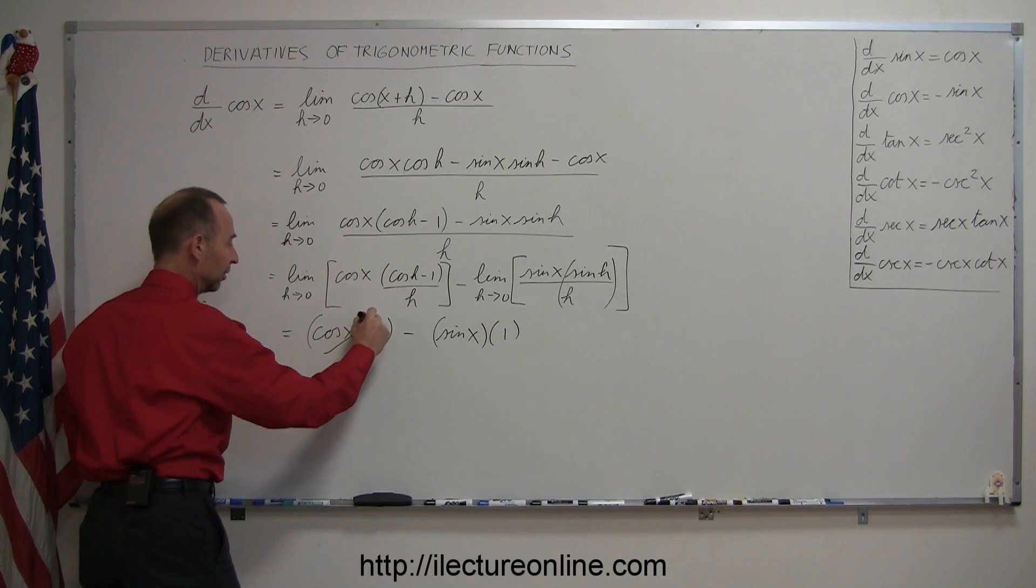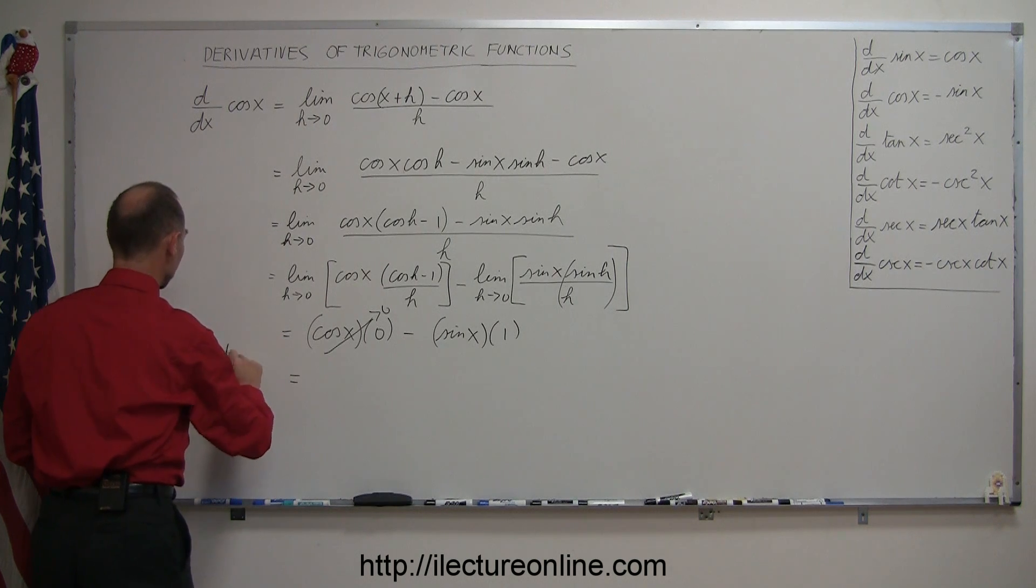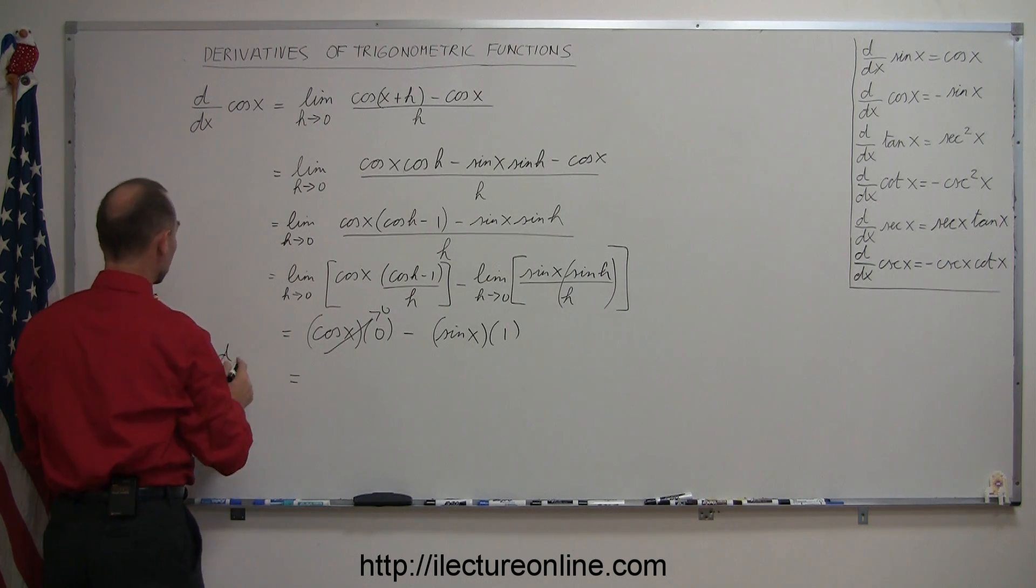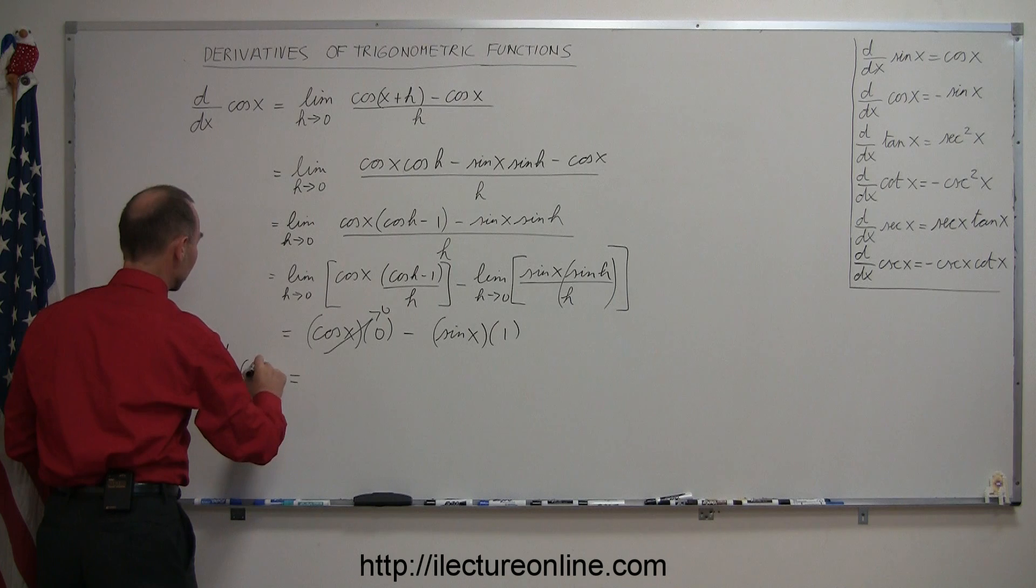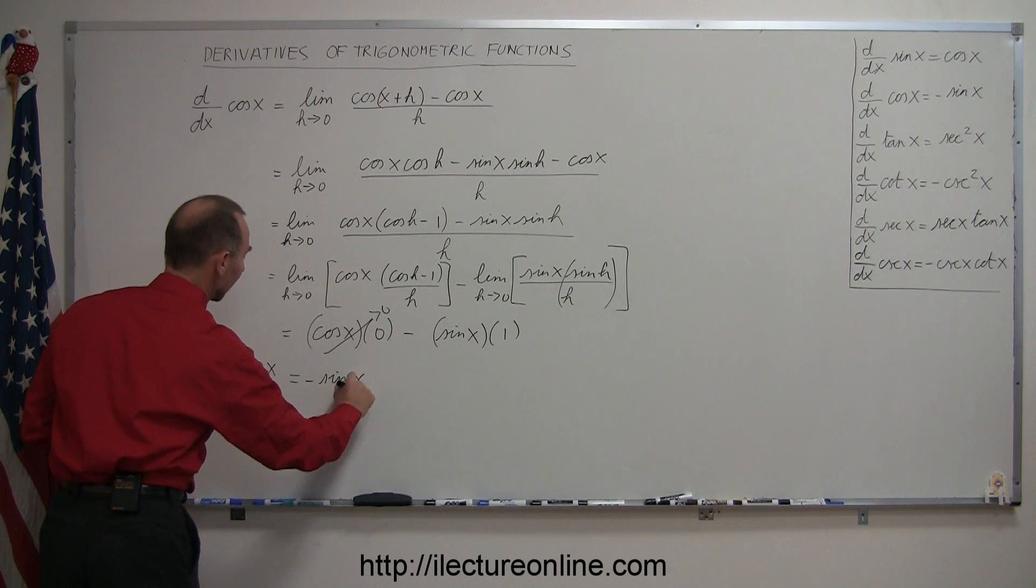Since it's multiplied times zero, this goes to zero, and the answer then is the derivative d/dx, or the derivative with respect to x of the cosine of x, is equal to minus the sine of x.